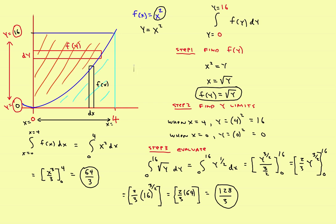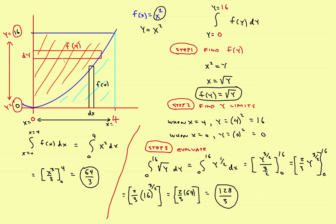The area below the curve and the x-axis is 64 thirds; the area between the function and the y-axis is 128 thirds. To summarize the three steps: step one, find the function in terms of y; step two, change the limits in terms of y; step three, evaluate. If you want the area between the function and the x-axis, use vertical rectangles and put everything in terms of x. If you want the area between the function and the y-axis, put the entire problem in terms of y — function and limits — and solve.